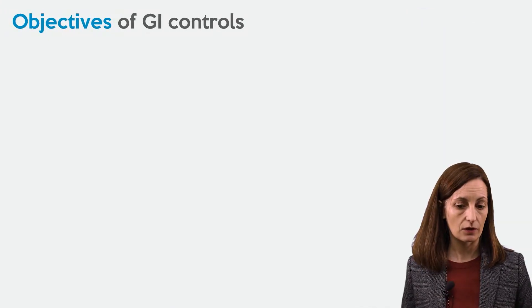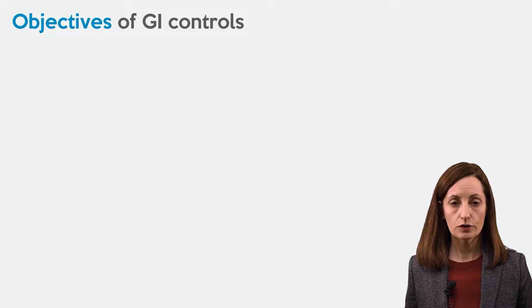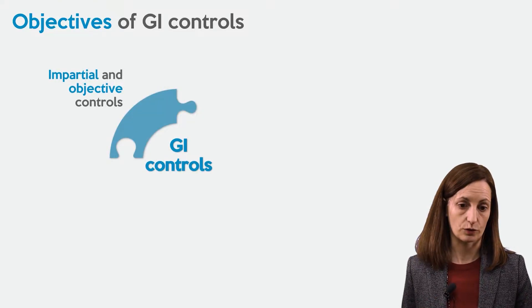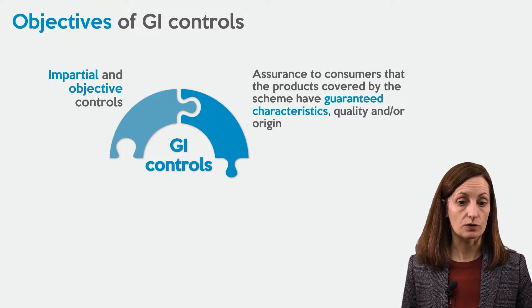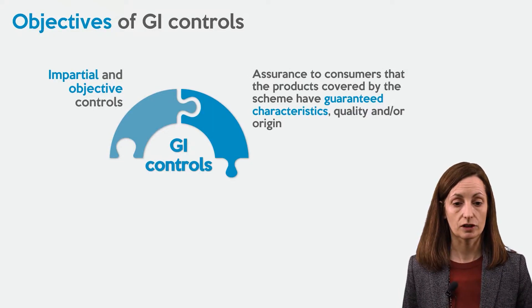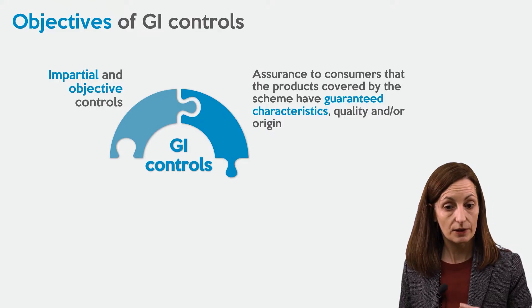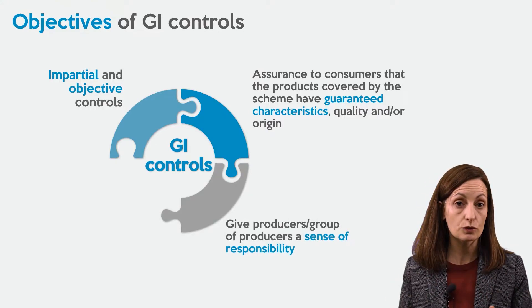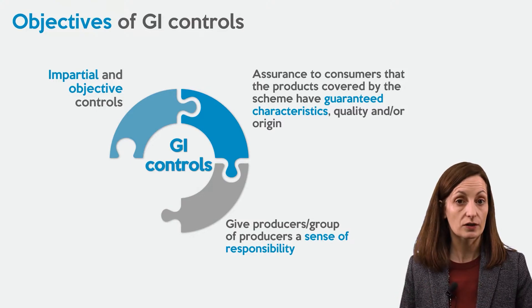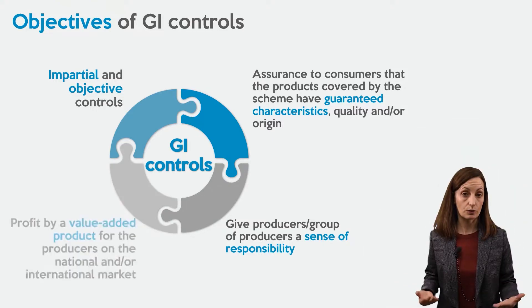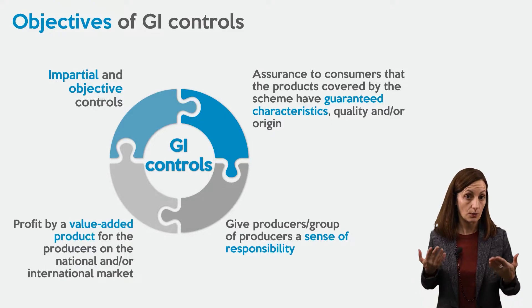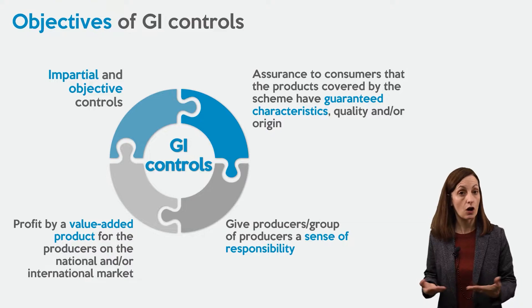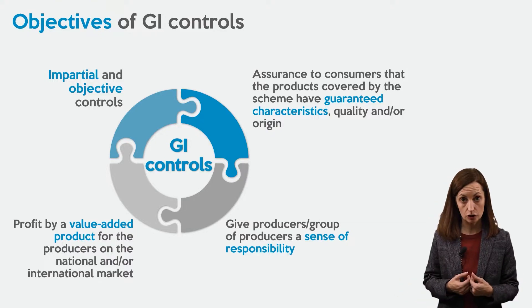What are the objectives of the GI controls? First of all, we need to implement impartial and objective controls. It will be the assurance for consumers that the product covered by the GI has specific characteristics, quality, and origin. Also, it will give producers or groups of producers a sense of responsibility. GI control can also be considered as a profit — a value-added product for the producers on the national and international markets.